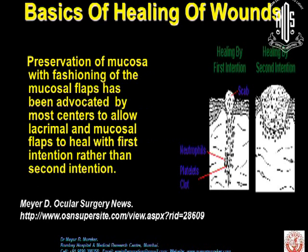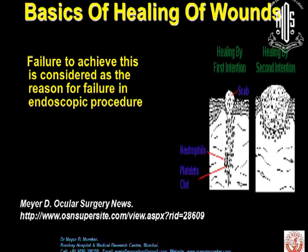As far as healing is concerned, we all know that healing in the body can occur by primary or first intention, or by secondary or second intention. Preservation of the mucosa and mucosal flaps has been advocated by most surgeons to allow mucosa and mucosal flaps to heal with first intention rather than second intention, because there is less scarring and less scar tissue. Failure to achieve this is considered to be the reason for failure of DCR procedures in oculoplasty.